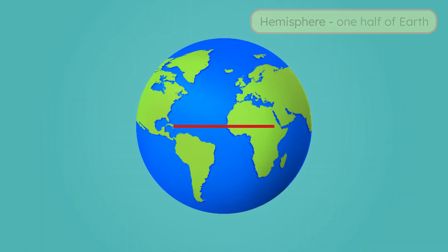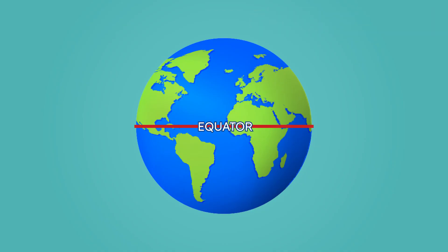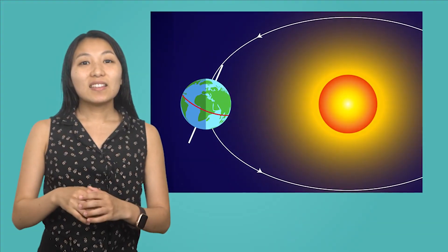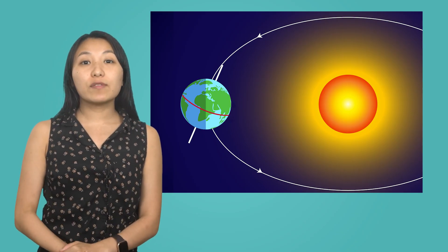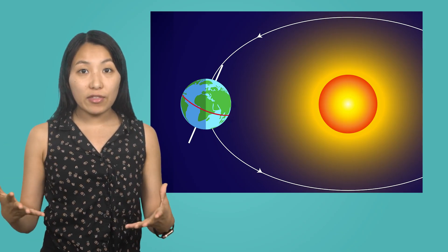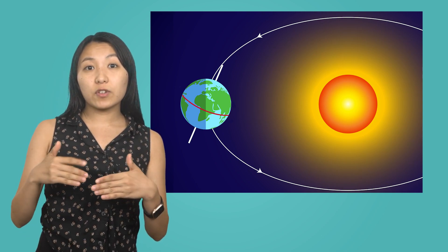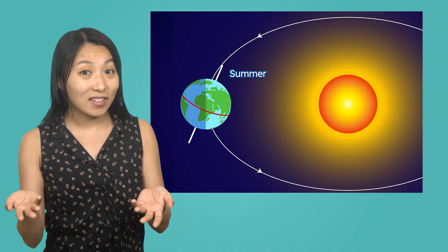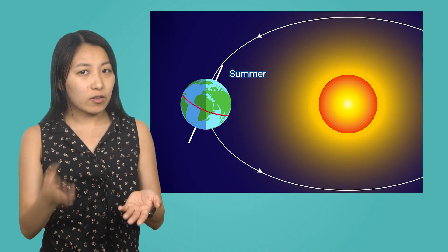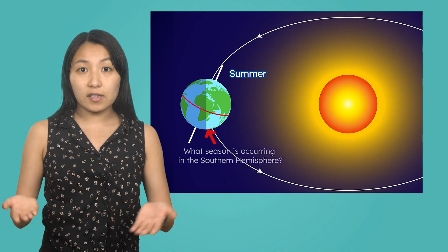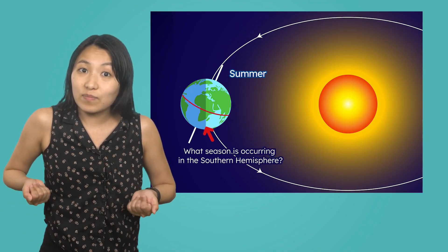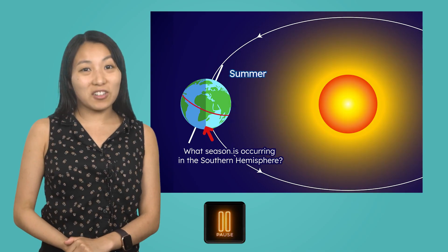Earth is also divided into hemispheres, or halves. An imaginary line called the equator divides the Earth into the northern and southern halves, or the northern and southern hemispheres. The hemisphere tilted toward the sun receives more direct sunlight, resulting in hotter weather and more hours of daylight — in other words, when the northern hemisphere tilts toward the sun, it's summer. But if it's summer in the northern hemisphere, what's going on in the southern hemisphere when it's tilted away? Pause the video and record your thoughts in your guided notes.